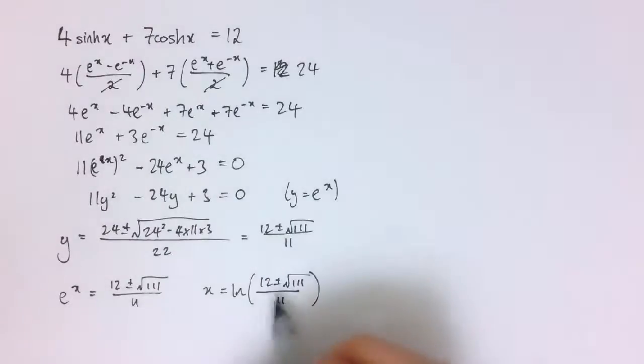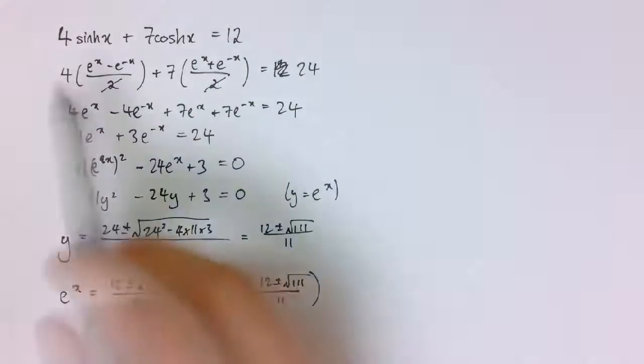Of course when taking the logarithm we do need to make sure we're taking the logarithm of something positive, but the square root of 111 is smaller than 12 so this is going to be positive even for the negative one. So we do get two different solutions there. You can leave your answer like this or you can put it in your calculator and give it as a decimal. So that's a method that works well for this sort of equation.